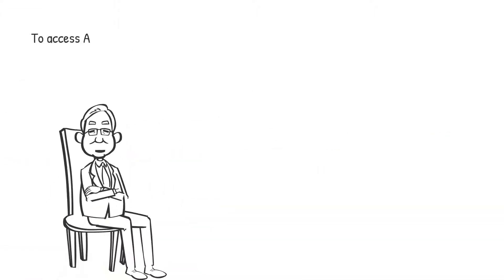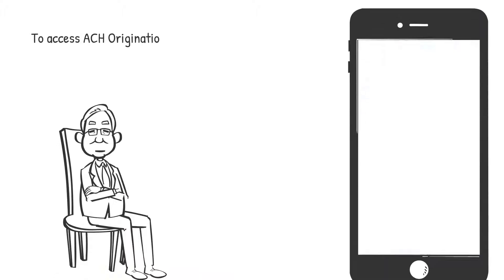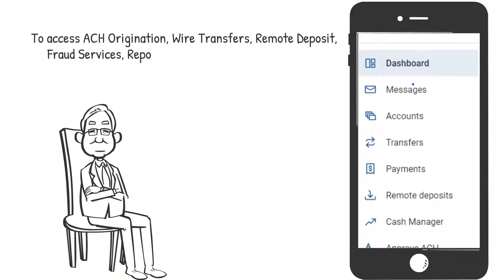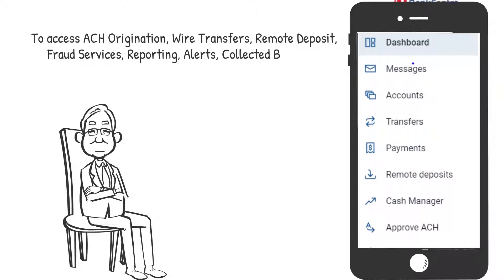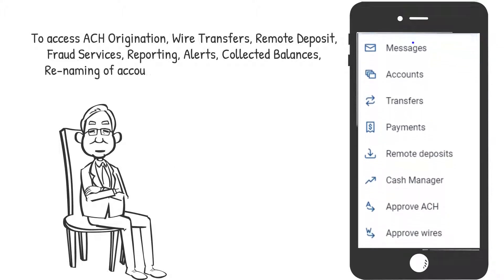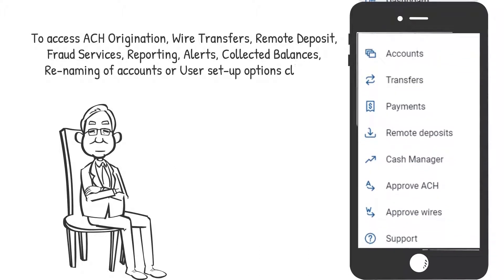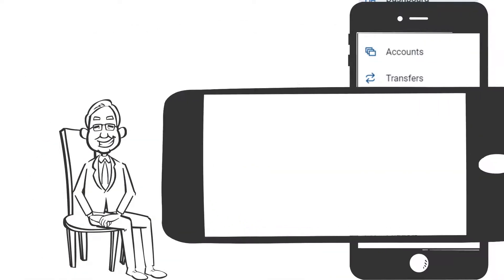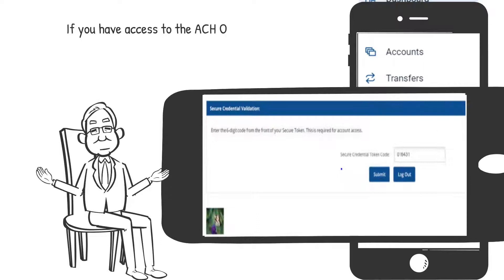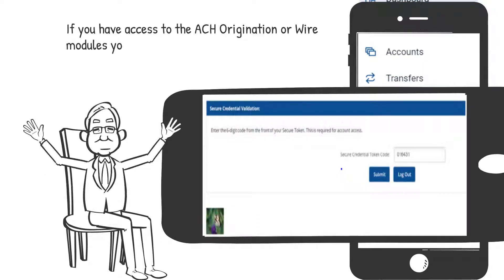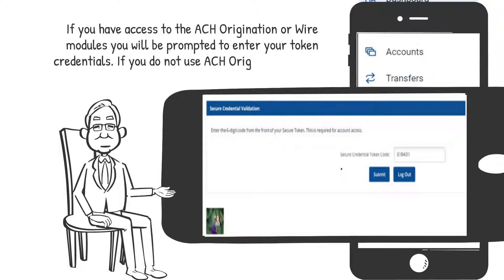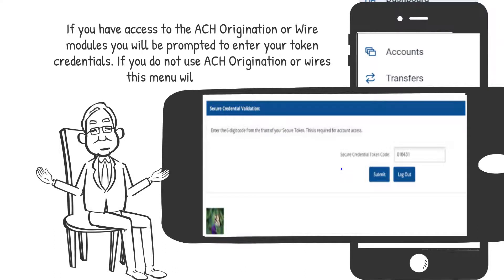To access ACH origination, wire transfers, remote deposit, fraud services, reporting, alerts, collected balances, renaming of accounts, or user setup options, click on Cash Manager. If you have access to the ACH origination or wire modules, you'll be prompted to enter your token credentials. If you do not use ACH origination or wires, this menu will not appear.